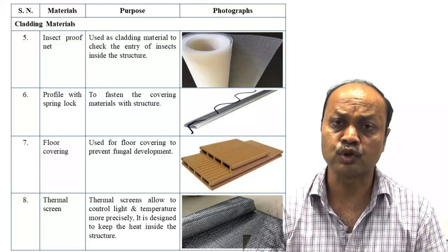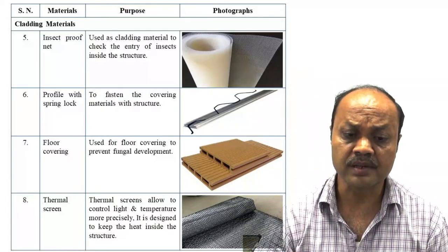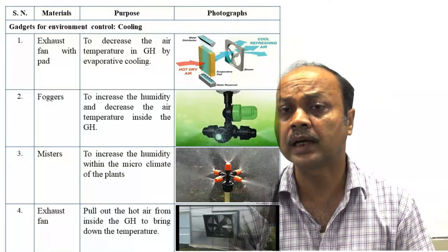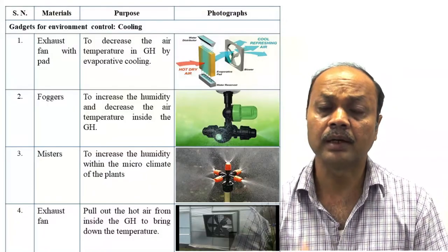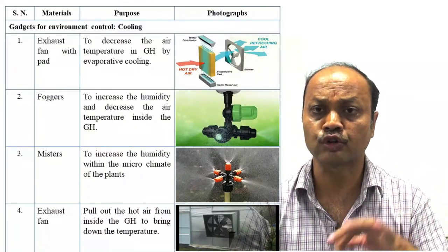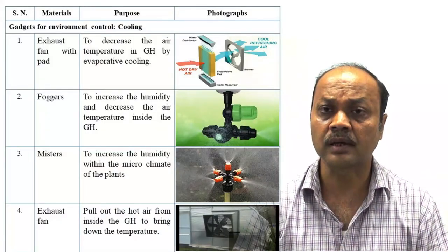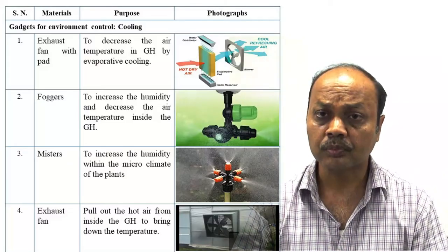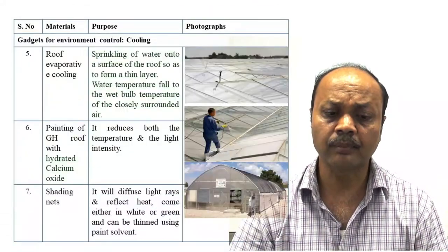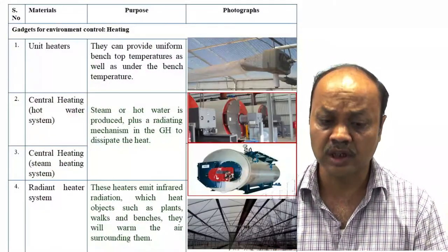Insect proof net and floor covering are used to prevent fungal development or weed growth, using weed mat. Thermal screen is used, and exhaust fan is used for active or forced ventilation. For forced ventilation, exhaust fan pulls out hot air from inside the greenhouse. In natural ventilation, it depends on wind speed and temperature gradient. To make ventilation more effective, exhaust fan can be used. Roof cooling with calcium hydroxide and shade paint is also applied.